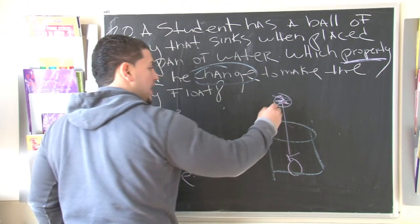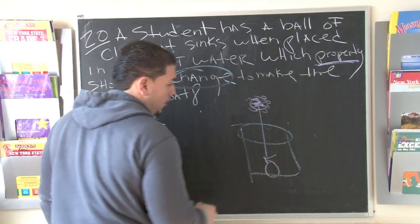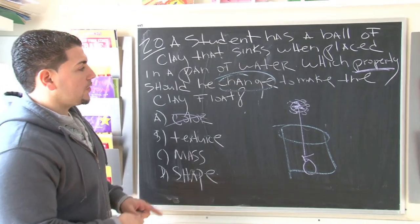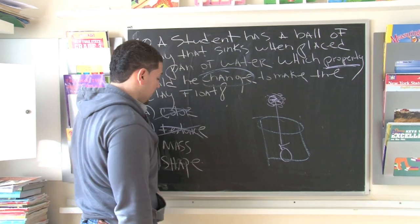What about the texture? Maybe if the texture of the ball had little bumps on it, it might change the way it floats in the water. But truth be told, that's not really going to affect whether or not it floats. So the texture has nothing to do with it.